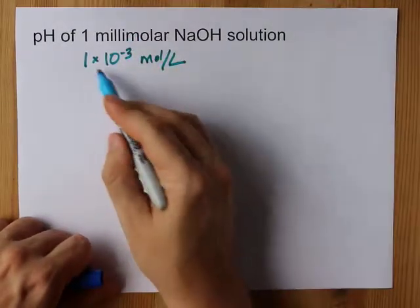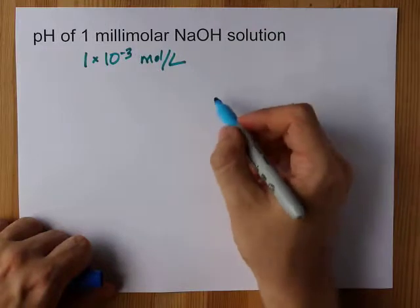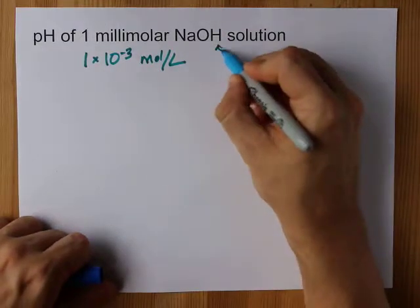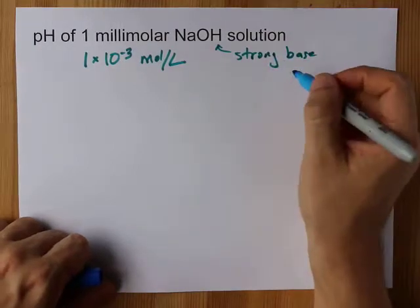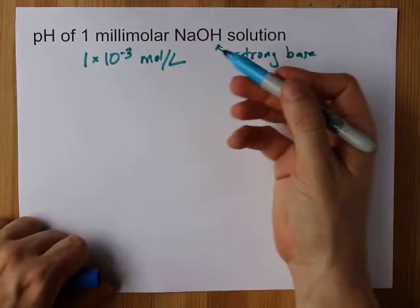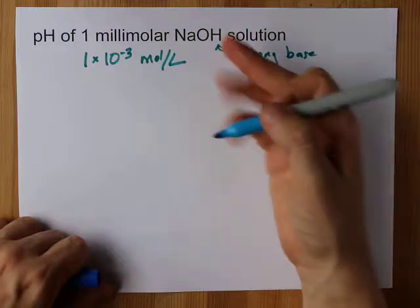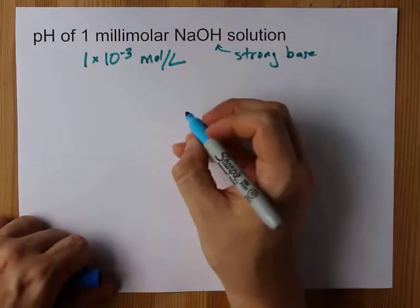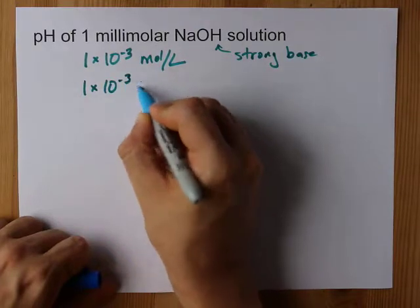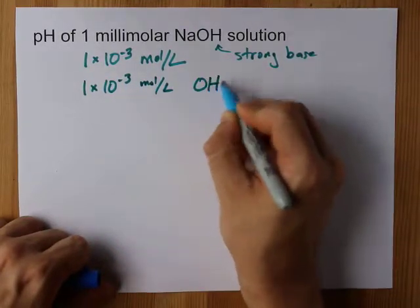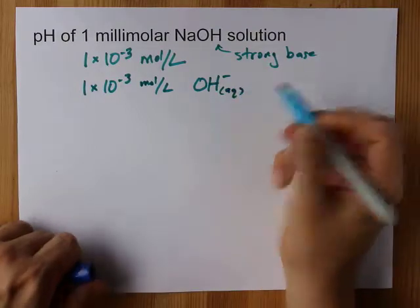So 1 millimolar is 1 times 10 to the negative 3 moles per liter of NaOH, which I hope you can identify as a strong base. What that means is that every single NaOH that dissolves into the water gives you an OH-. What that means is that you end up with the exact same concentration of OH- ions in solution.